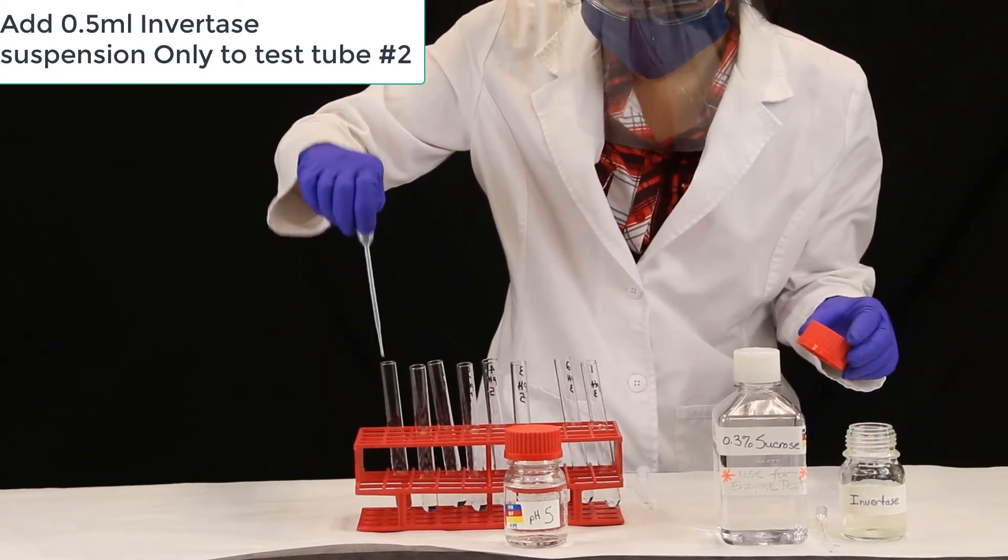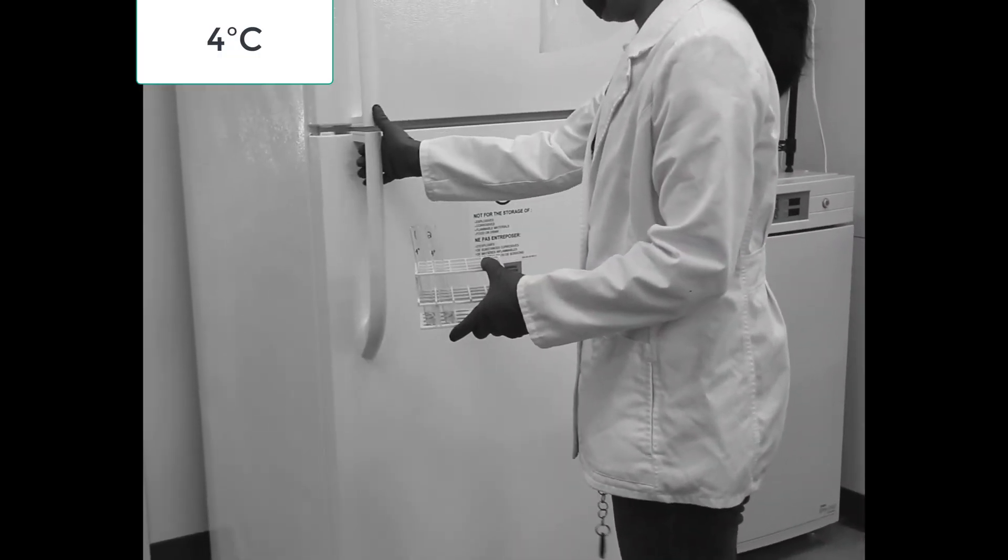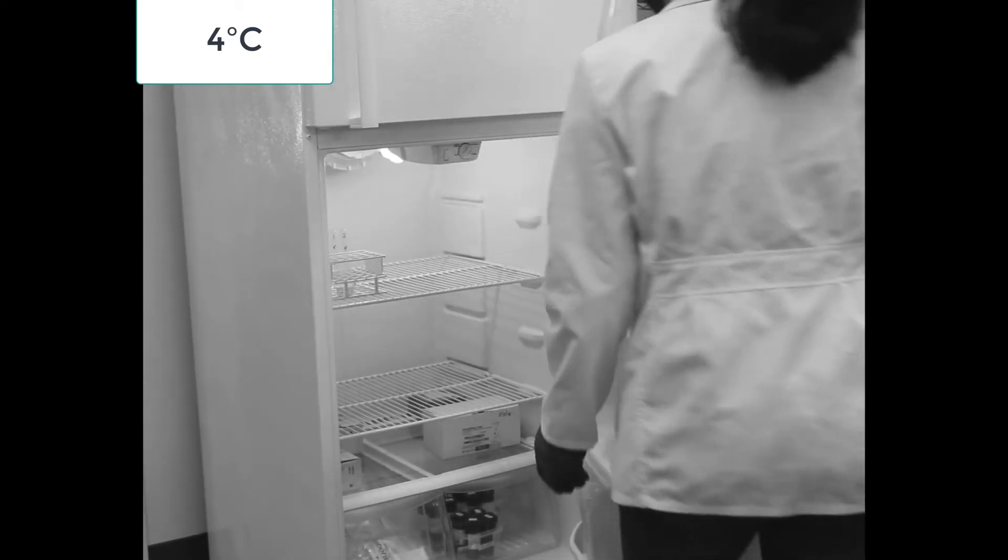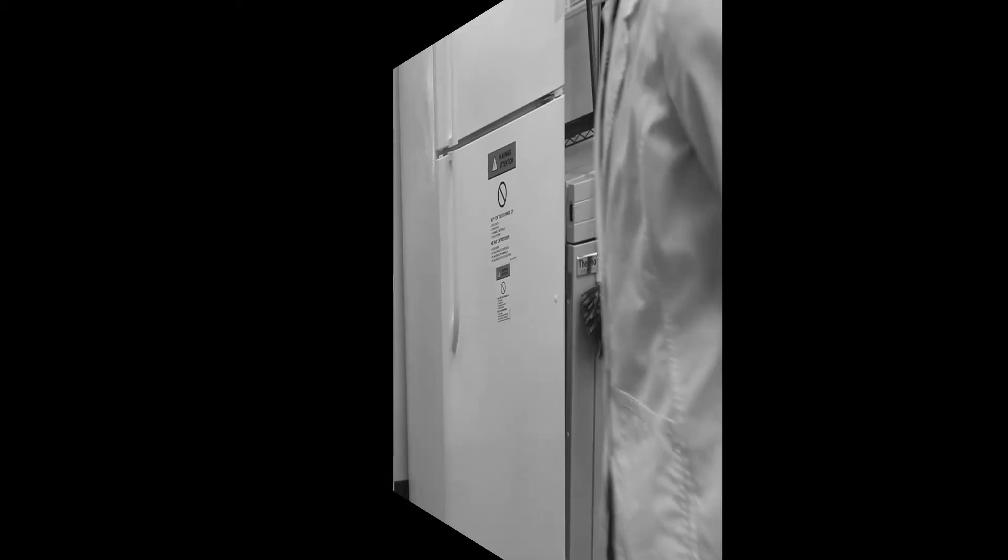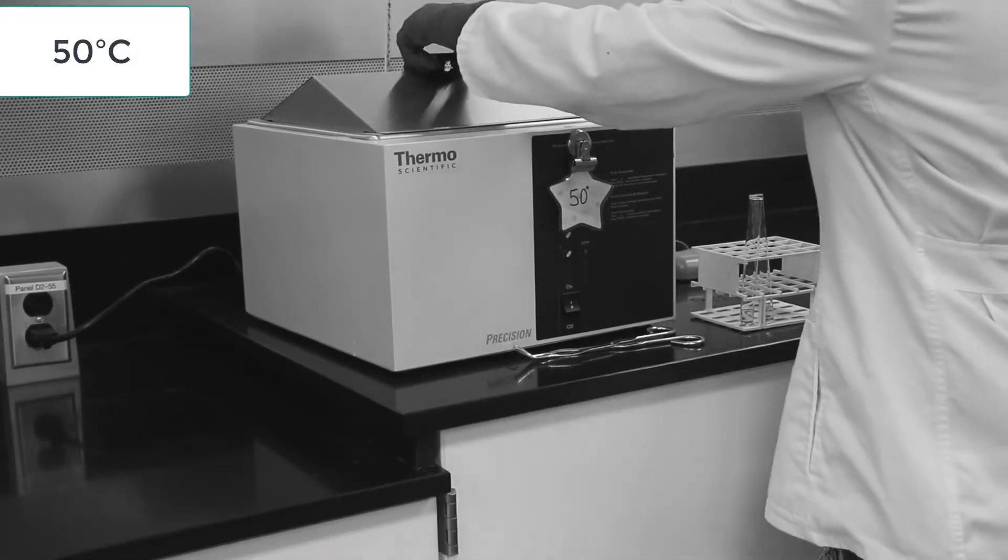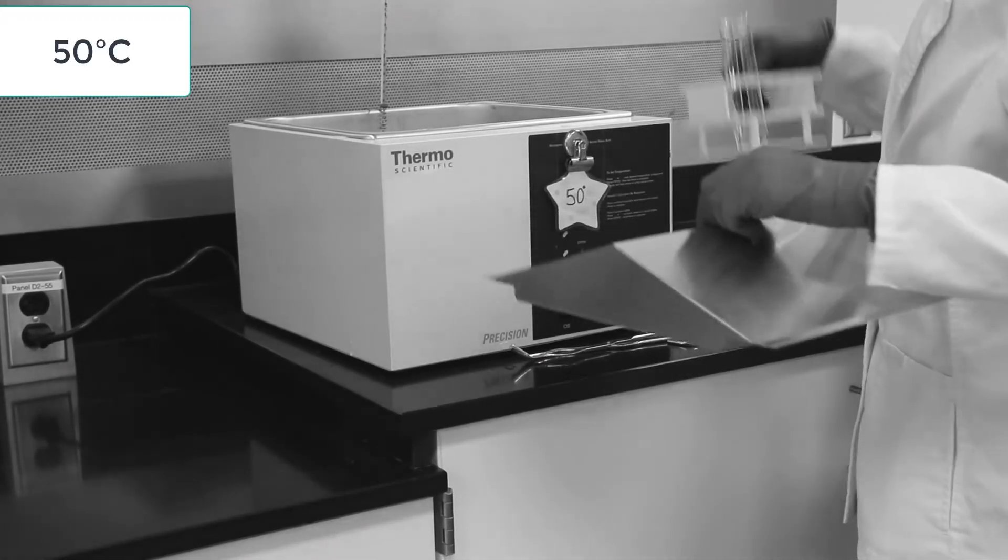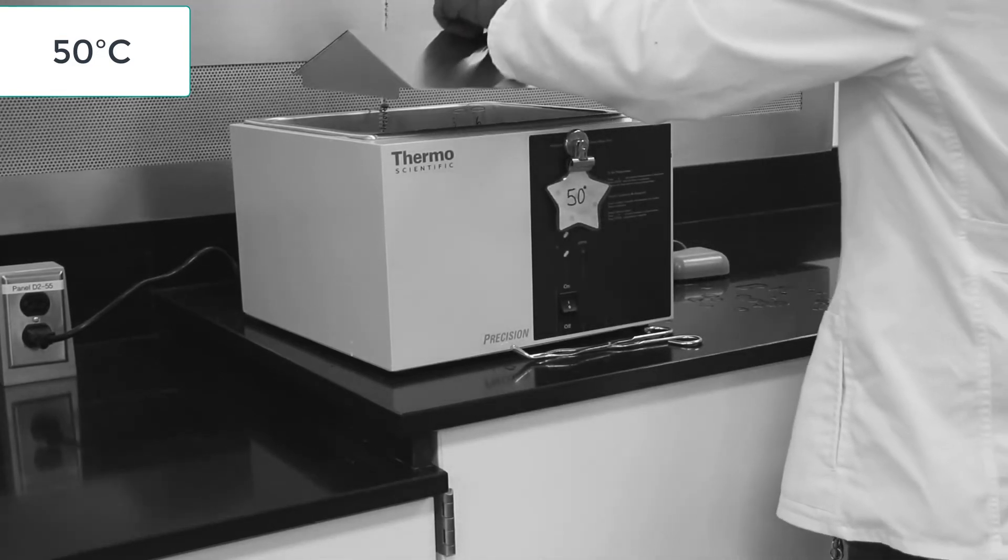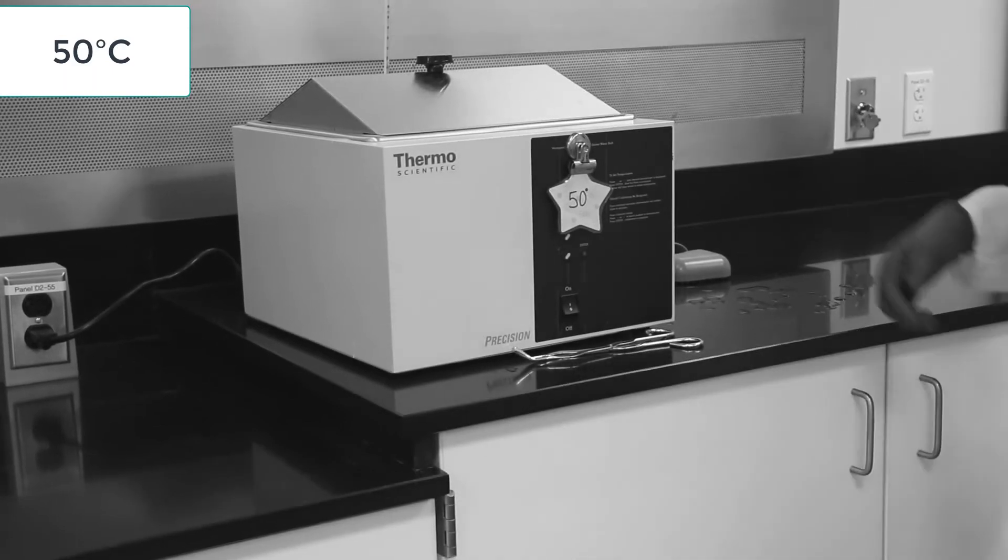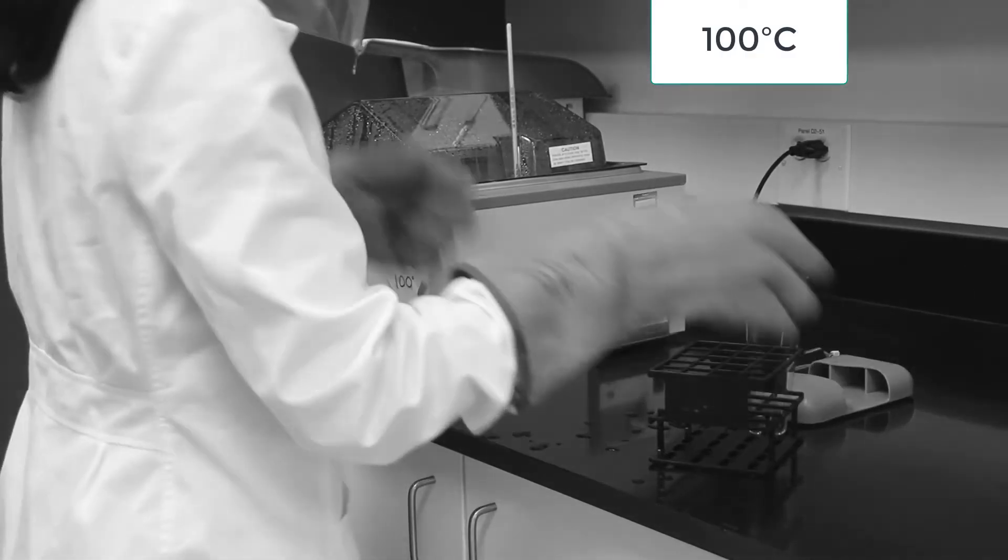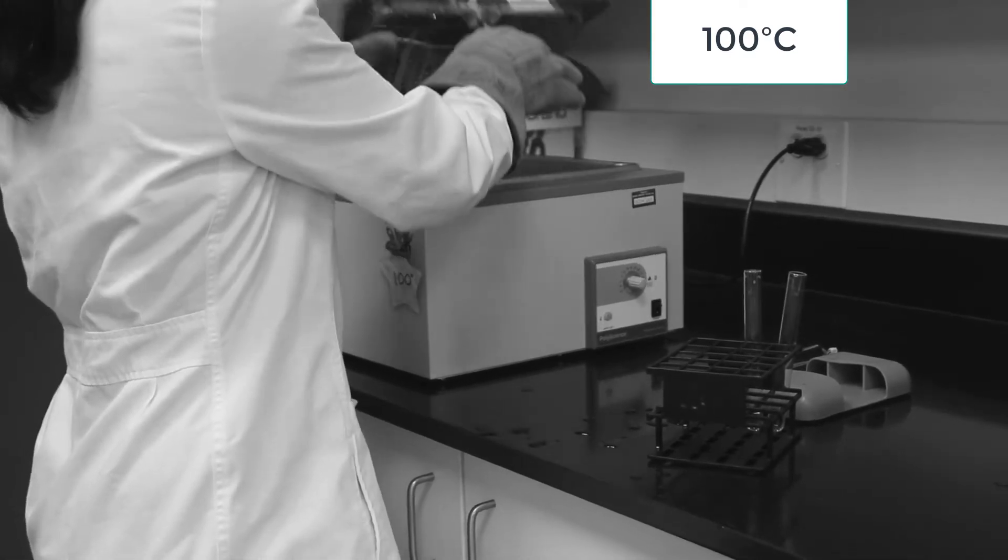We will incubate each group of test tubes at their assigned temperature for 15 minutes. Tubes 1 and 2 go into the refrigerator at 4 degrees centigrade. 3 and 4 will be set on the counter for 20 degrees. 5 and 6 will go into 50 degree water bath. Be careful it's hot. 7 and 8 will go into the 100 degree water bath. Be very careful it's very hot.